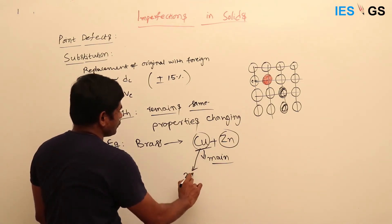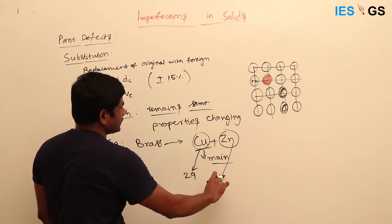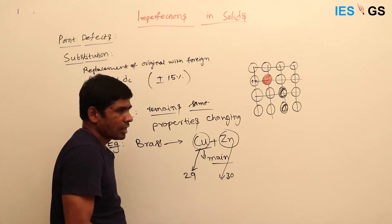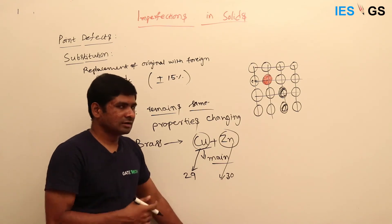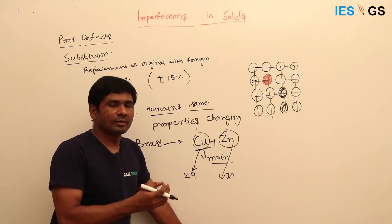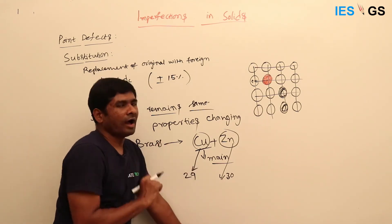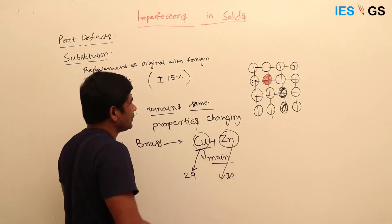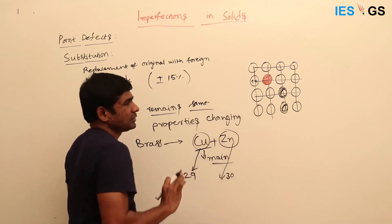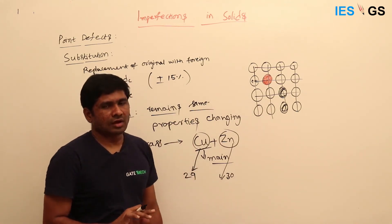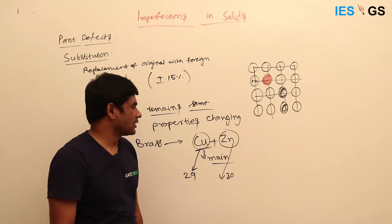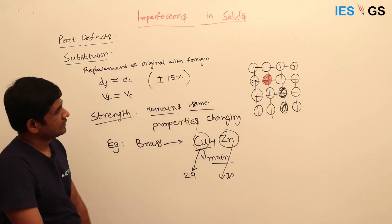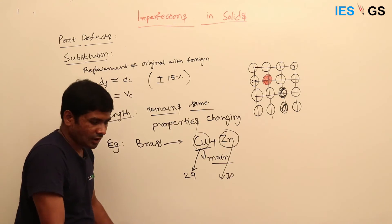Copper has atomic number 29 and zinc is 30, so they are very close. The number of electrons is very close, which means the atomic size is also very similar. That is why copper atoms can be easily replaced with zinc atoms. There is a small difference in valency, but it is chemically acceptable.